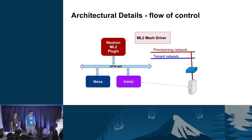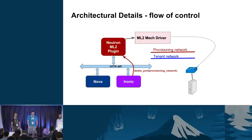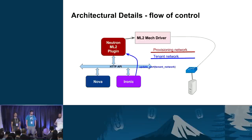At a certain stage, Ironic will initiate the network flip. A delete port on the provisioning network is issued, which goes to Neutron and back to the mechanism driver, which un-configures that particular port on the switch - the server is disconnected from the provisioning network. Simultaneously, it will issue an update port on the tenant network. Remember, the port was already created by Nova - Ironic is coming in and issuing an update with all the profile information present. The mechanism driver then knows what to do with it and configures the appropriate interface with the appropriate VLAN information. That's how the port gets bound on the tenant network, and you have a complete server up and running on the tenant network.